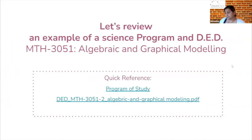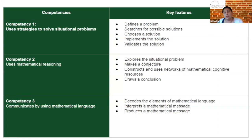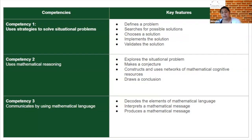I took MTH 3051 as an example to go through all the documentation and see what it provides us. When looking at competency, we have three competencies in math: Competency 1, Competency 2, and Competency 3. Notice that Competency 3, if you look at the documentation, is not evaluated on its own - it's embedded in Competency 1 and Competency 2. In these documents you have key features and manifestations.